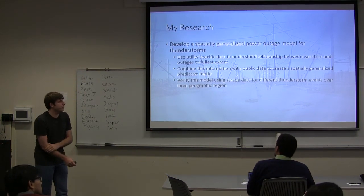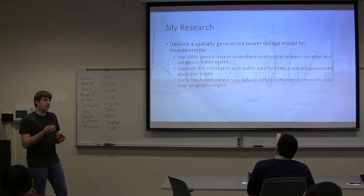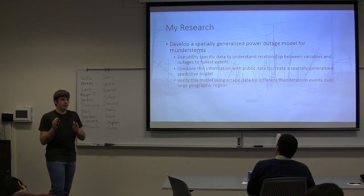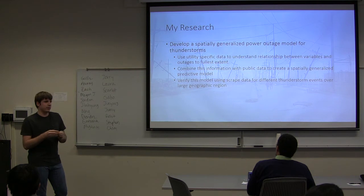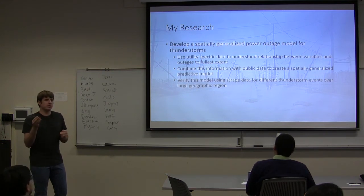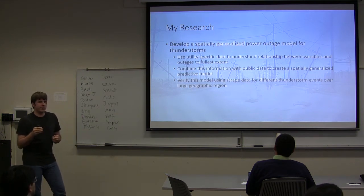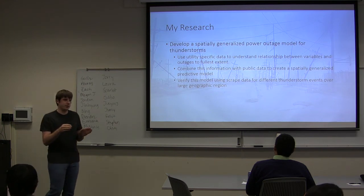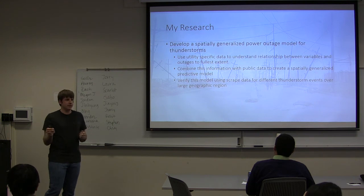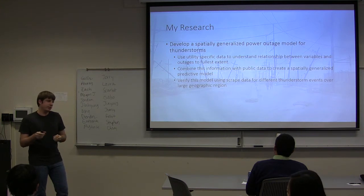To do that, I first need to start with a utility-specific model where I can use an observed data set and the exact location of power lines, transformers, and other variables to get a good data set on how thunderstorms cause outages. Then I'll use publicly available data in that area to create proxies for the specific variables using public data.